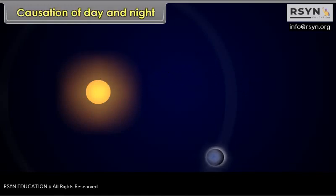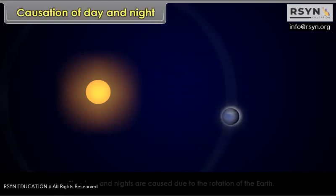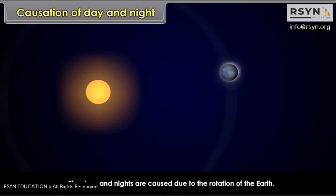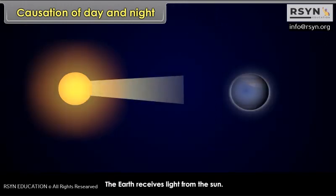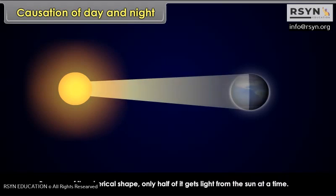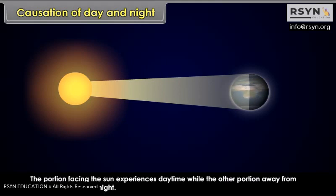Causation of Day and Night. The days and nights are caused due to the rotation of the earth. The earth receives light from the sun. Because of its spherical shape, only half of it gets light from the sun at a time. The portion facing the sun experiences daytime, while the other portion away from the sun experiences night.